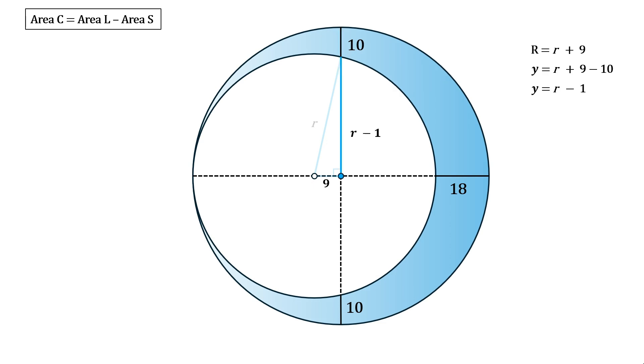Right, now we have everything we need to work out r. Remember we have this right triangle so we can use Pythagoras to solve for r. C squared equals a squared plus b squared, where c is the radius, a is r minus 1, and b is 9.